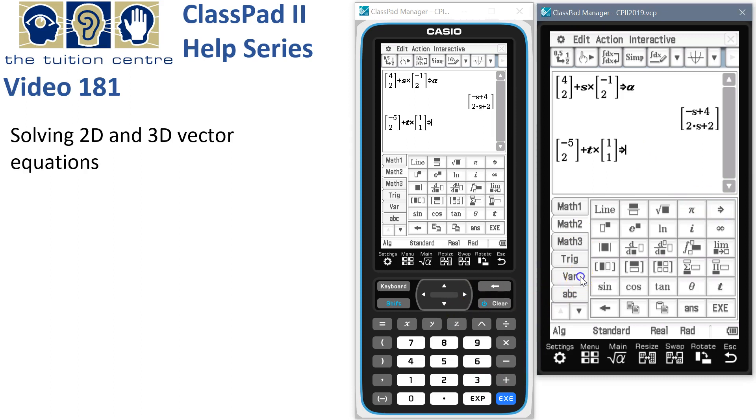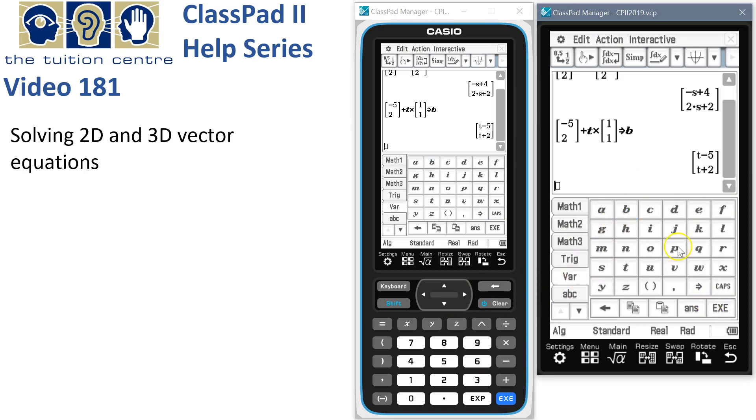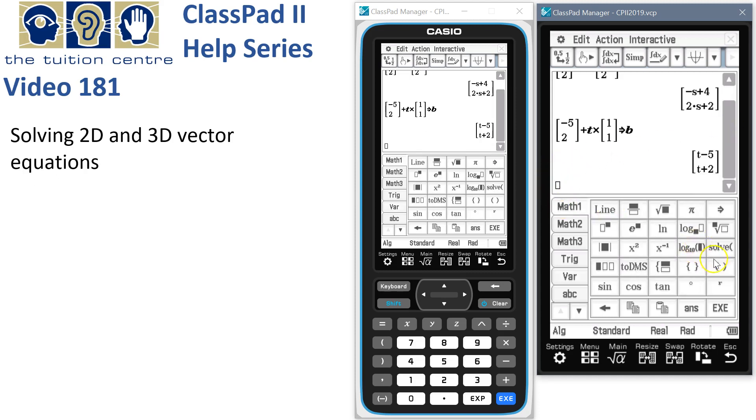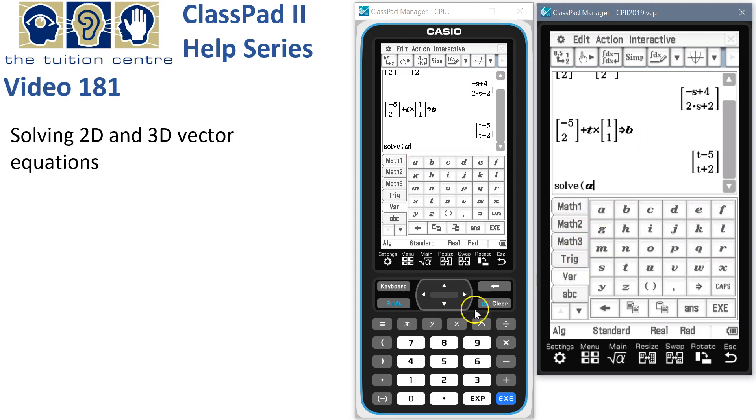We've got A and B at the two positions of these particles at any time. We want to find where their paths cross and maybe whether they collide. All we have to do is come down and start with solve.